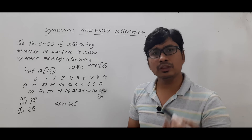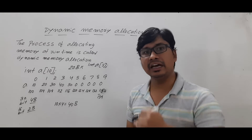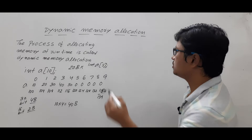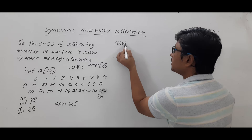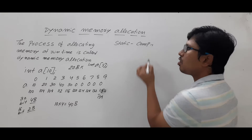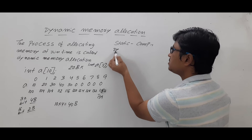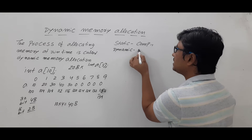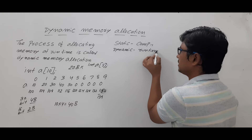To overcome these limitations, C developers introduced the concept called dynamic memory allocation. The process of allocating memory at compile time is called static memory allocation, and the process of allocating memory during runtime is called dynamic memory allocation.